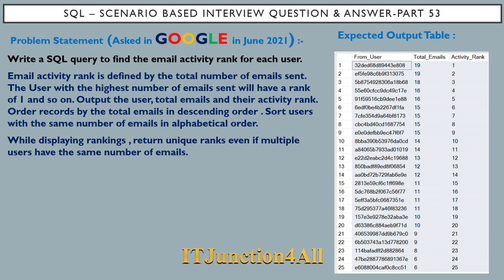We have to output three columns: first the user column, second the total emails column, and third the activity rank column. We have to order the records by total number of emails sent in descending order. Sort users with the same number of emails in alphabetical order. Return unique ranks even if multiple users have the same number of emails — so even if multiple users have the same emails, we have to give a unique ranking.